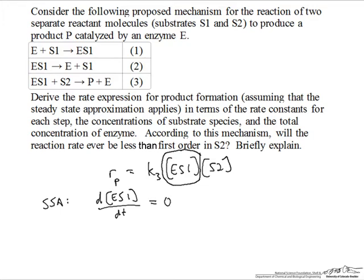The enzyme-substrate complex one is formed in reaction one and depleted in reactions two and three, and so we just use elementary rate laws to describe those reactions. We have K1 for the first reaction times concentration of enzyme to the first power times concentration of S1 to the first power.